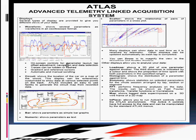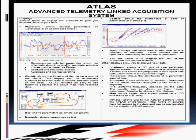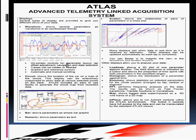When talking about ATLAC displays, several types of displays are provided to give you different views of your data. Like waveform, which shows several parameter waveforms in an oscilloscope format. The circuit display shows the location of the car on the map of the circuit. These displays can be extensively customized to show data at various selected points on the track.